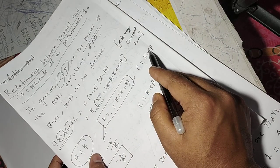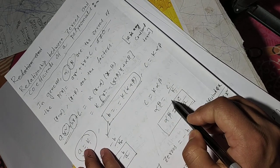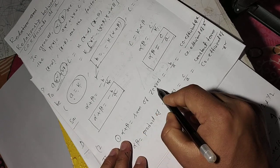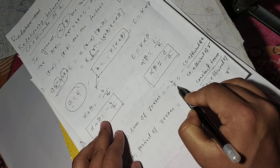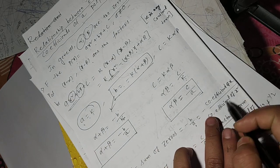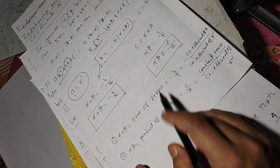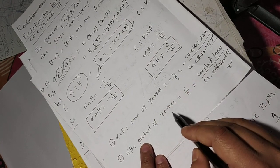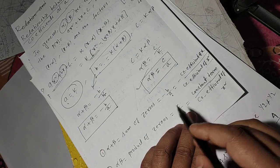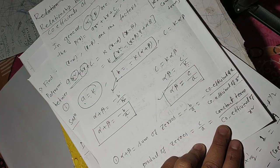Now c equals k times alpha beta, so alpha beta equals c by k. Since k equals a, alpha beta equals c by a. Therefore, sum of zeros equals alpha plus beta equals minus b by a, which is minus the coefficient of x divided by the coefficient of x squared. Product of zeros equals alpha beta equals c by a, which is the constant term divided by the coefficient of x squared.